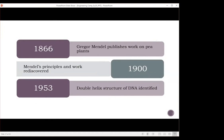In 1866, Gregor Mendel published work on pea plants — he's known as the father of modern genetics. But it was not until 1900 that his work became recognized, and it was in the 1900s that genetics really became a field. It wasn't until 1953 that the double helix structure of DNA was identified. Watson and Crick are given the credit, but Rosalind Franklin took the picture that led to the identification of DNA's double helix structure — she was not given the wide credit she deserved at the time, and we're working on making up for that in modern times.